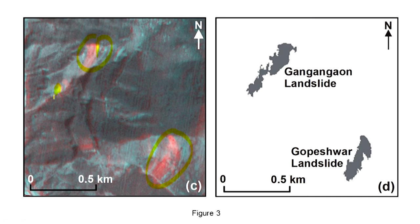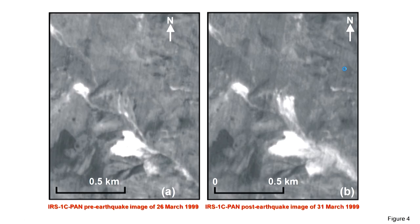Let me bring one more example of landslides from the same region induced by the same earthquake. Further using the pseudo color transformed (PCT) image and doing one more step in image processing — that is, masking everything except keeping the red part — we can exactly delineate the landslide-affected region. Two major landslides, namely the Gagan and Gopeshwara landslides, were marked very clearly and precisely using this threshold value.